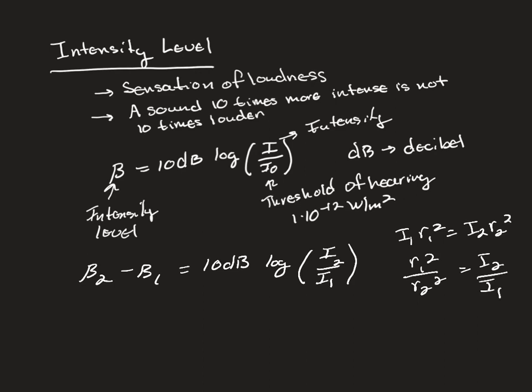So notice once again, you're seeing that inverse relationship. So when I go to plug in for intensity 2 over intensity 1, it becomes r1 squared over r2 squared. So be careful of that. Because intensity and distance are inversely related, they are reversed when you're using distance rather than intensity.